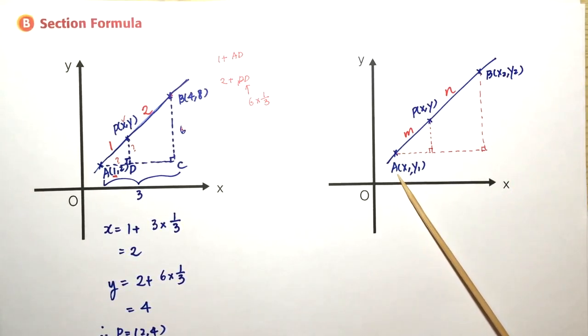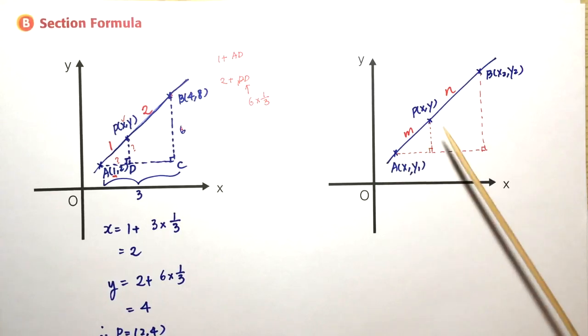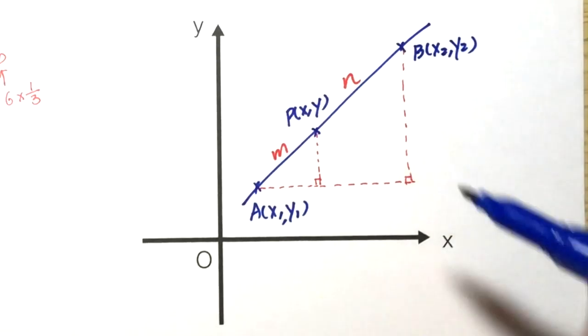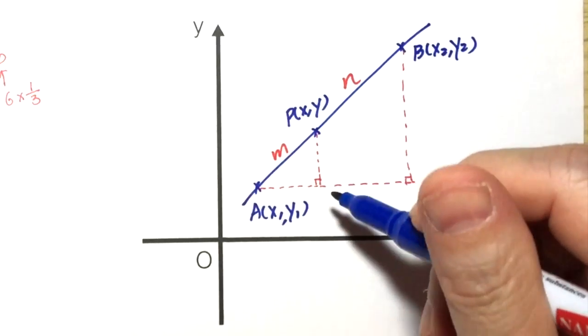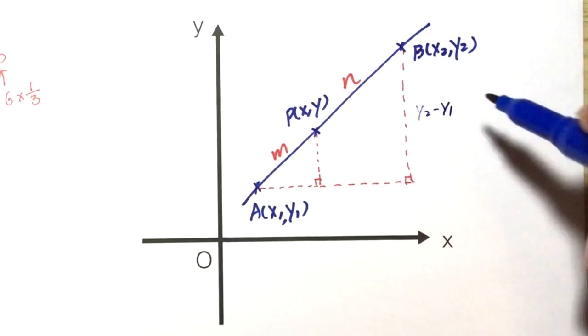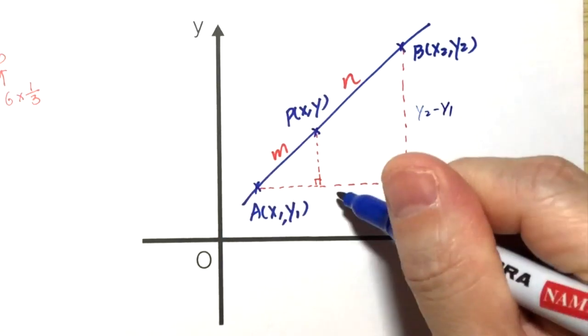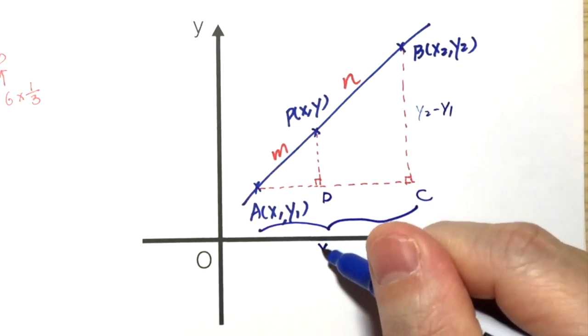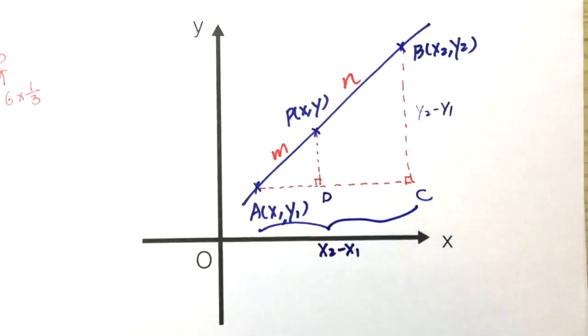Similarly, if point A is (x1, y1), point B is (x2, y2), and P divides AB in the ratio m to n, we can find the value of x. This will be y2 minus y1, and AC will be x2 minus x1.